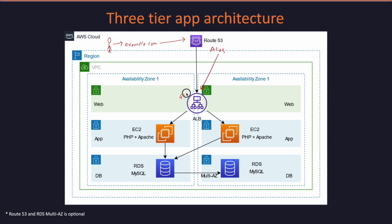In the web tier, ports 443 or 80 would be configured on the load balancer, and a target group will point towards the EC2 instances on HTTP ports like 80. For the app tier, I have shown individual EC2 instances configured in two separate availability zones.